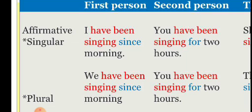For first person plural, the structure is: subject plus have plus been plus main verb plus -ing. For example: We have been singing since morning. For second person, you have been singing for two hours. Here, 'for' is used for a period of time — the duration.